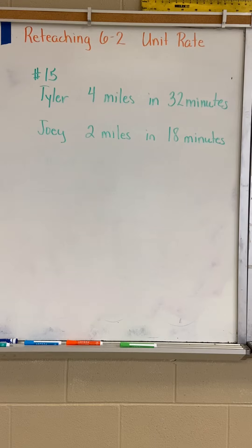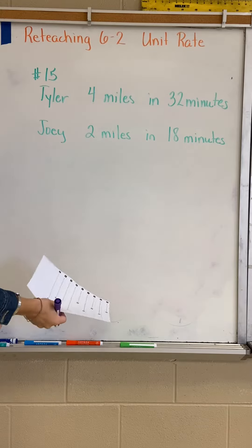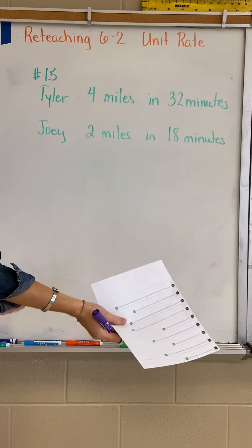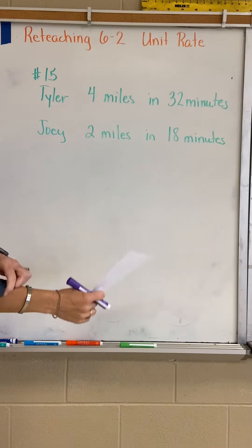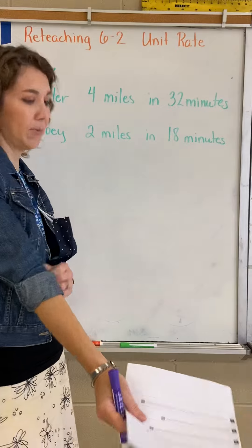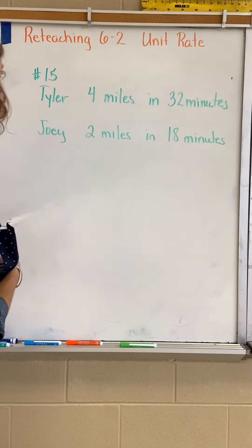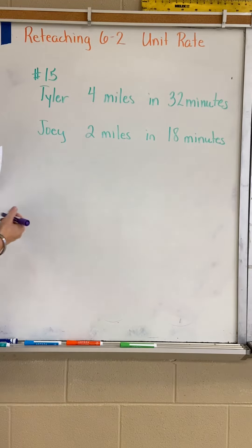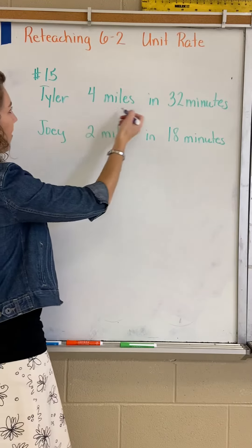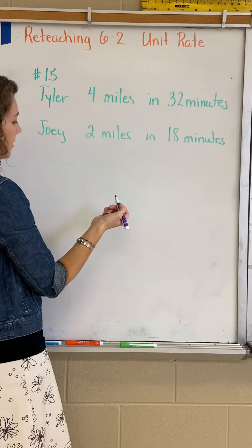Number 15 says that Tyler jogged four miles in 32 minutes and Joey jogged two miles in 18 minutes, and I want to know who is the fastest. Tyler's got four miles in 32 minutes.